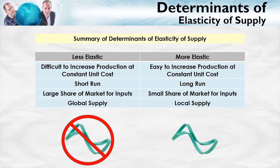What makes a supply curve more elastic? A supply curve will be elastic when it's easy to increase production at constant unit cost. Supply curves tend to be more elastic in the long run compared to the short run, more elastic when the good has a small share of the market for its inputs, and more elastic when we're talking about local supply of a good rather than the global supply, which tends to be less elastic.